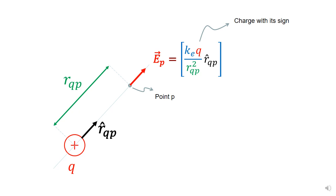We're going to do an example to get the total electric field due to many charges. In this case, there are going to be only two charges. But we're going to do it using this formal rule of getting the electric field.